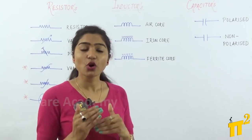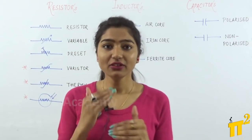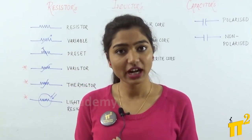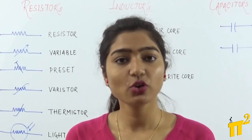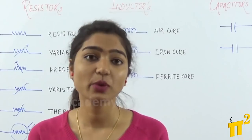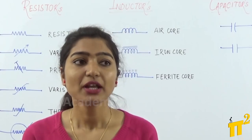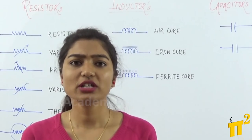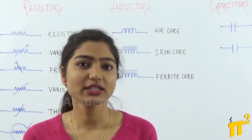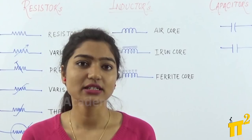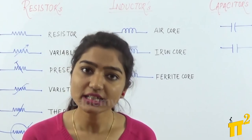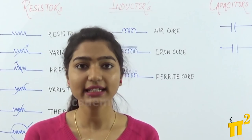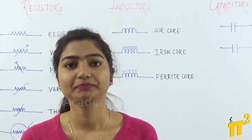That was all about air, iron and ferrite core. I hope you got the differences very clearly. The next common question that arises is: what is the difference between a choke and an inductor?